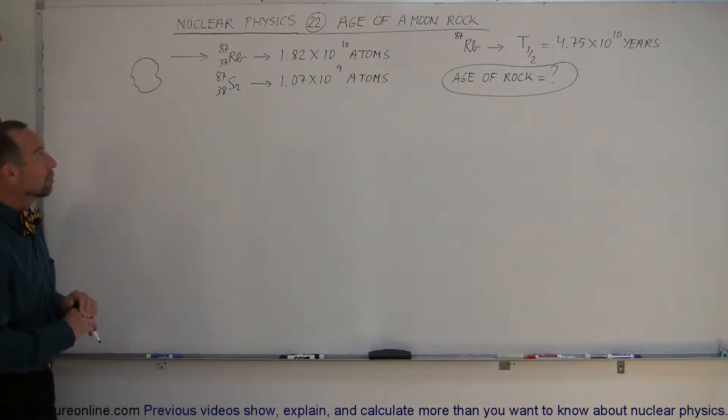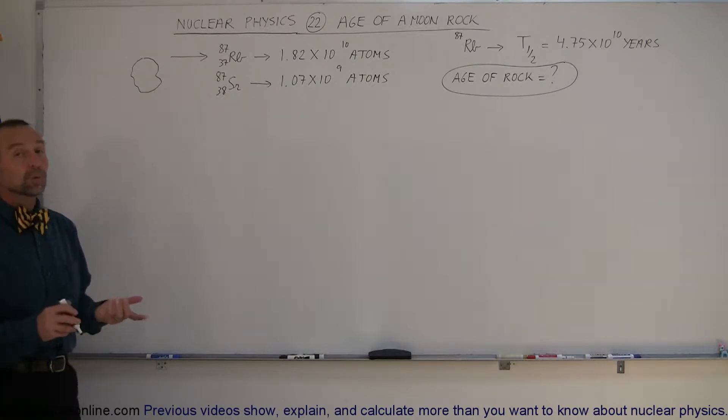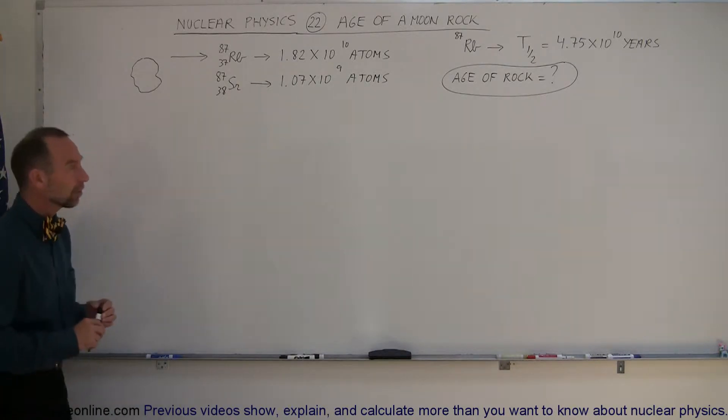Another great example of how we can use nuclear physics is to find the age of, let's say, a moon rock. And over the years we've brought back almost 850 pounds of moon rocks to be analyzed to find out more about the moon.